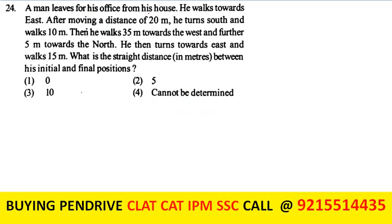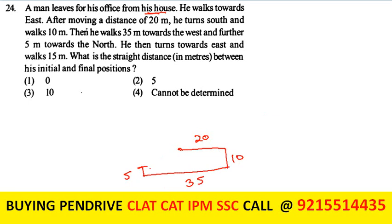A man walks 20 m east, then 10 m south, then 35 m west, then 5 m north, then turns east and walks 15 m. Net east-west: 20 - 35 + 15 = 0. Net north-south: 5 - 10 = 5 m south. The straight distance between his initial and final position is 5 meters. The answer is 5.